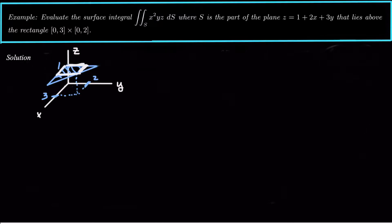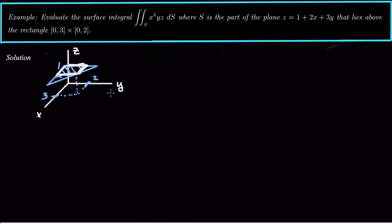So let's look at this plane. It's actually a plane that starts out below the xz plane and the yz plane, and then it starts to slowly tilt up. We only want to be over this part of the xy plane — the part where x is between 0 and 3 and y is between 0 and 2. So we only want this little segment of our plane and we want to evaluate the surface integral over that piece.